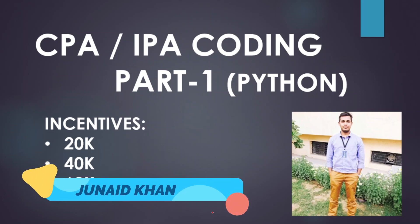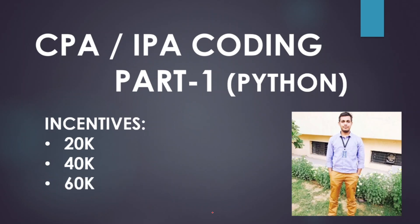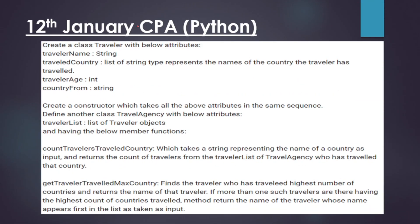Hello friends, this is Junetran and in today's video I will be talking about the CPA or IPA coding questions — this is part one. TCS is going to take CPA or IPA for the incentive purpose for people who are going to join TCS. After the interview and getting the joining letter, they generally get the CPA part. This is the Python part I'm going to share with you — these are 12th January CPA Python questions.